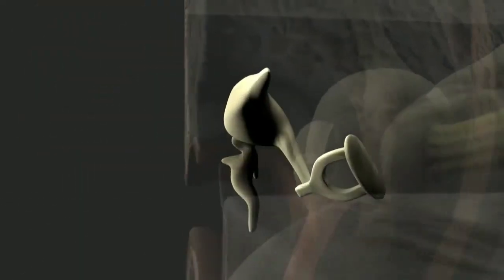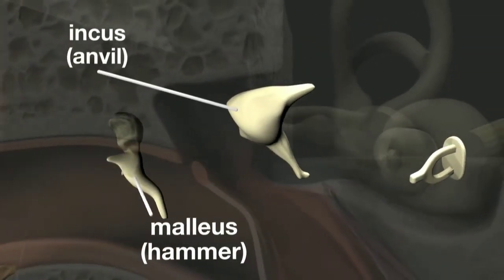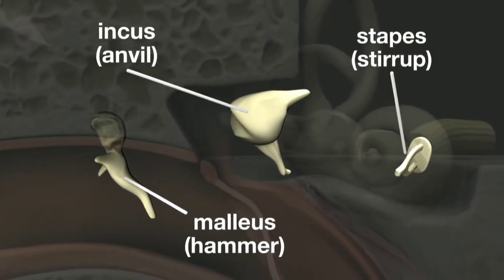The ossicles are called the malleus, the hammer, the incus, the anvil, and the stapes, the stirrup.